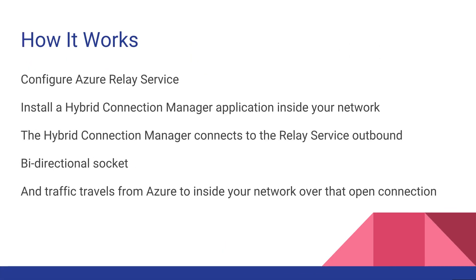So this is exactly how it works. You set up Azure Relay Service within Azure. Then there's this piece of software called Hybrid Connection Manager that you install inside your network. This is the Trojan Horse or the spy that is going to set this up — basically you're installing a piece of software in your network, and that Hybrid Connection Manager is going to connect to the Azure Relay Service using an outbound connection. This opens up two-way communication between the software inside your network and Relay Service running outside your network. It's a bi-directional socket, so traffic can travel from Azure over the Relay Service inside your network using this open connection that's been established.